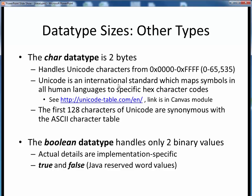For historic compatibility, and fortunately for us in an English-speaking environment, the first 128 characters of Unicode are identical to the ASCII character table. If you're interested, you can take a look at the indicated link, which is also given in this week's Canvas module for a Unicode table.